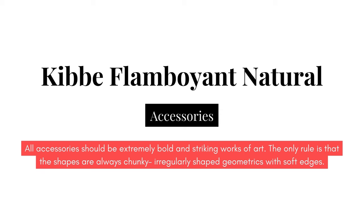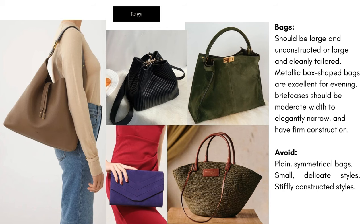Now let's talk Kibbe Flamboyant Natural accessories. Accessories should be extremely bold and striking — works of art. The only rule is that shapes are always chunky, irregularly shaped geometrics with soft edges. Bags should be large and unconstructed, or large and cleanly tailored, with firm construction — they can be relaxed but fabrics should hold their own shape. Avoid plain symmetrical bags, small delicate styles, and stiffly constructed styles. Hobo bags are wonderful but must have some shaping — nothing that will completely fall apart.